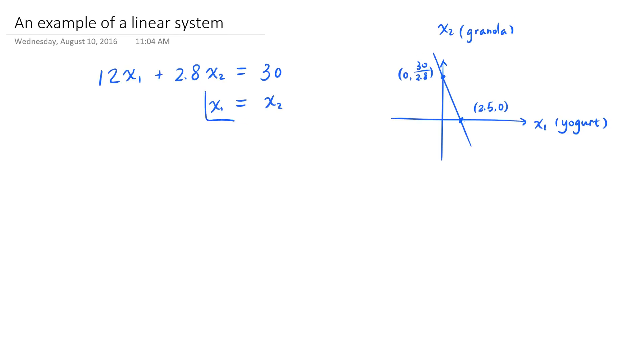The second equation we arrived at is also a linear equation. Because you can rewrite it in a standard form as x sub 1 minus x sub 2 is equal to 0. These two linear equations, equation 1 and equation 2,